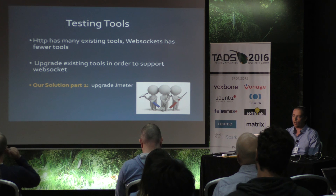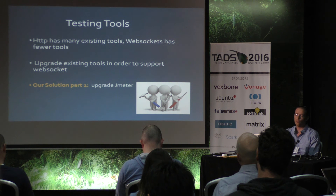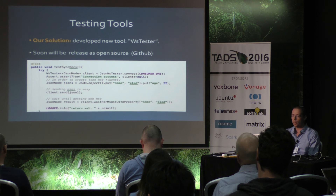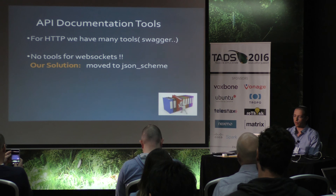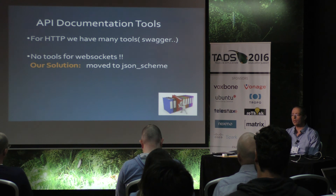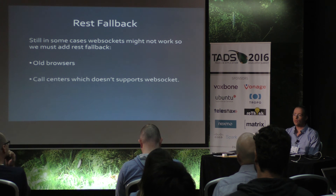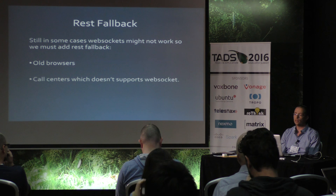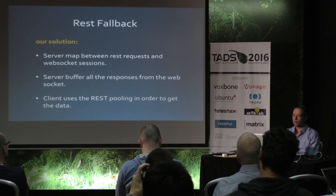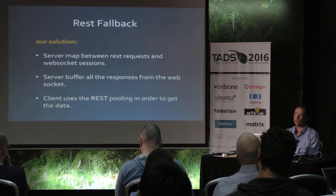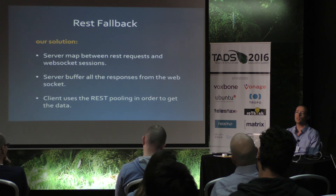Testing tools. There are many testing tools for WebSocket, though fewer than for REST. You can upgrade existing tools to support WebSocket — we, for example, upgraded JMeter. Or you can pick one of the newer tools. Additionally, we developed a new tool called WSTester, which will soon be released as open source. It provides a simple mechanism to open a connection, send a message, and validate the response. For API documentation, for HTTP we have many tools like Swagger, but there are no tools for WebSockets — so our solution was to move to JSON Schema. REST fallback: in some cases WebSockets may not work, such as old browsers or call centers that don't support WebSockets. Our solution was to have the server map between the REST and the WebSocket session, buffer the responses from WebSockets, and have the client use REST polling to get the data.